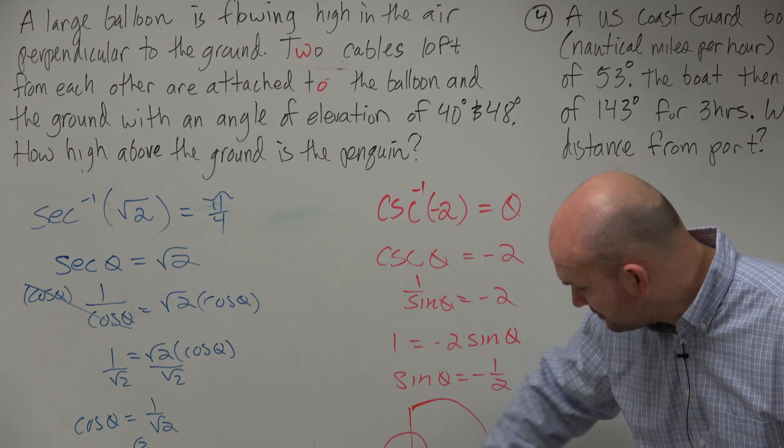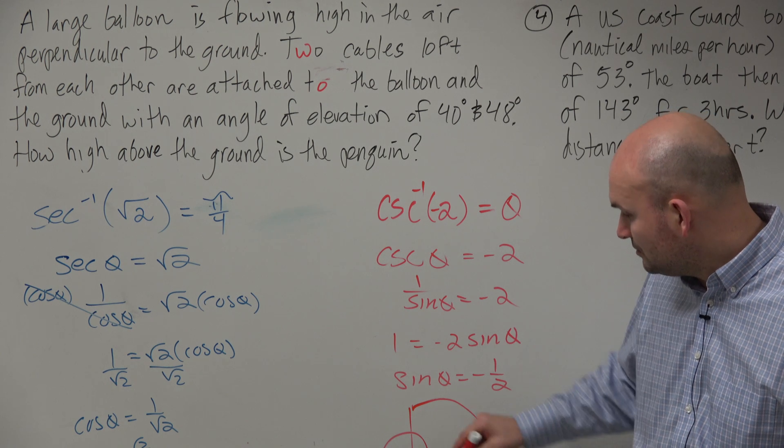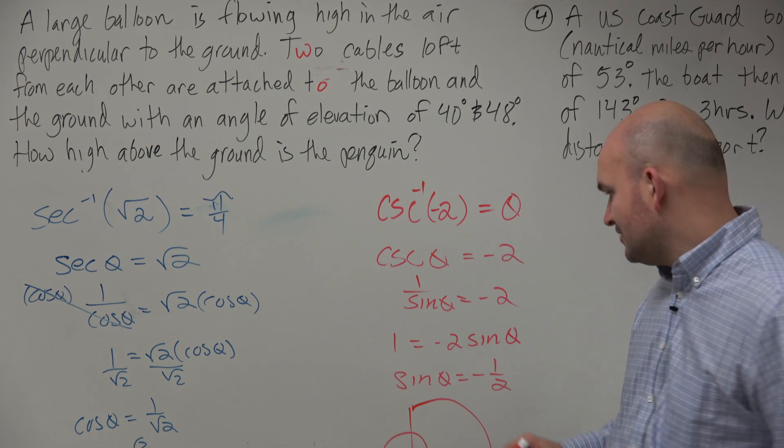So remember, the domain restrictions is between the first and the second quadrant. Therefore, we've got to get this angle and make it negative. So therefore, it's just going to be negative pi over 6.